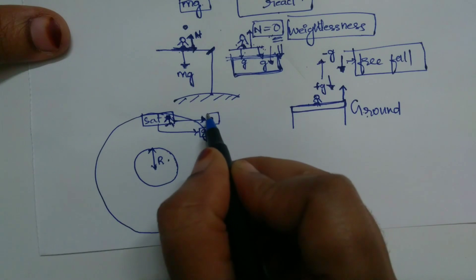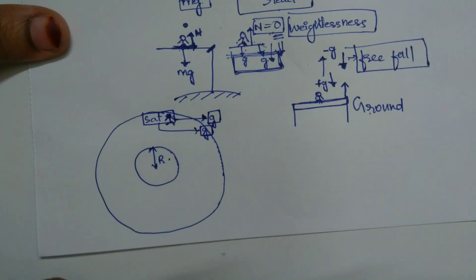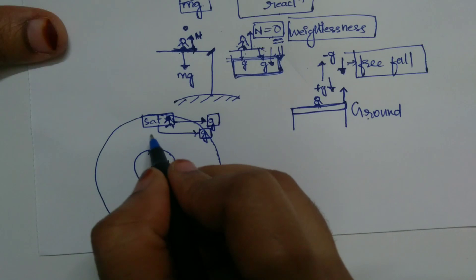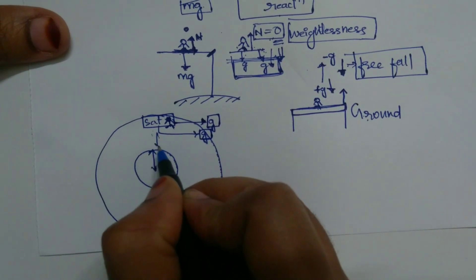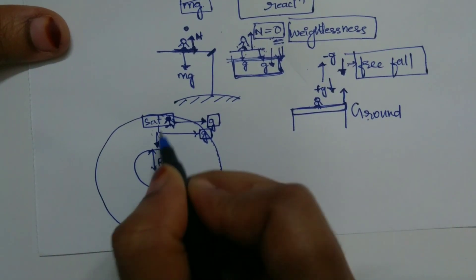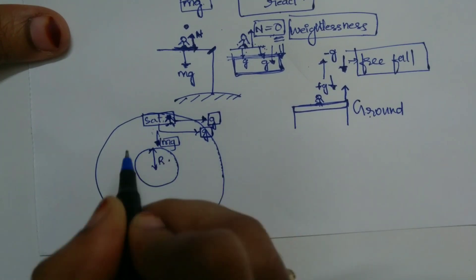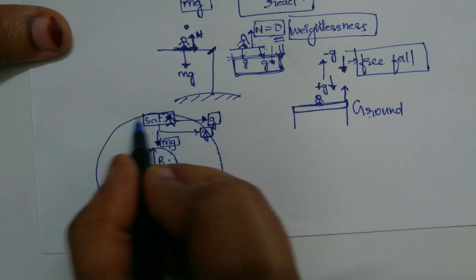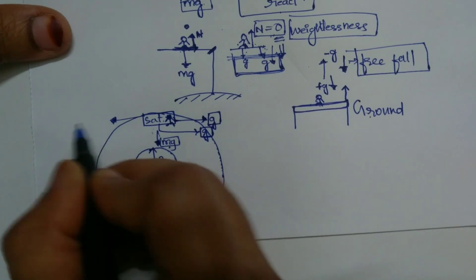Since both have the same acceleration due to gravity — the earth is attracting the satellite with the force of mg. But still the satellite is not moving towards the earth. Why? Because it is moving with a certain orbital velocity.